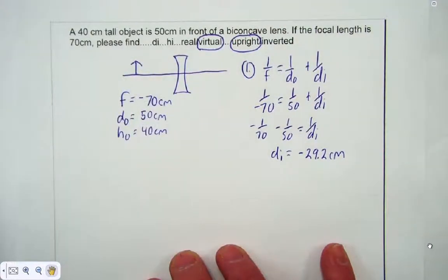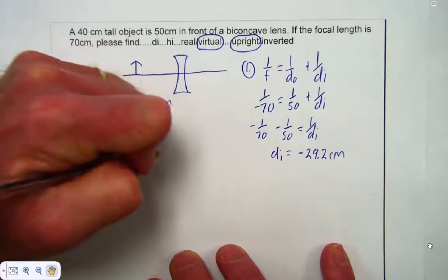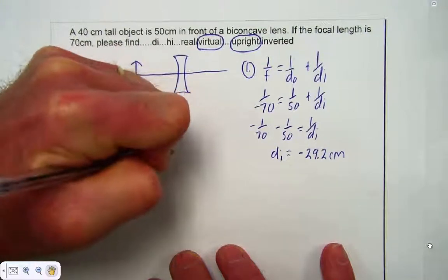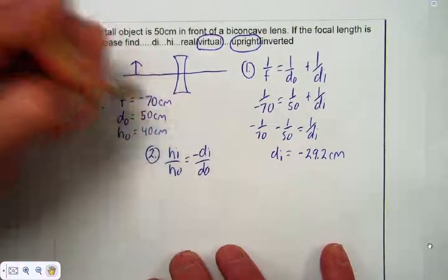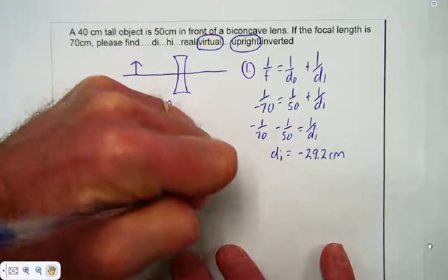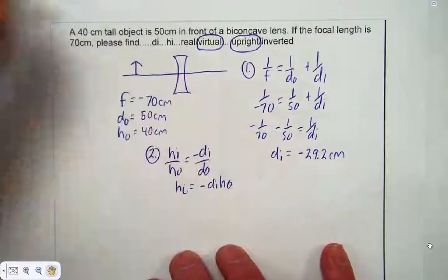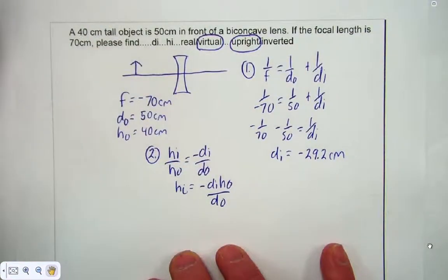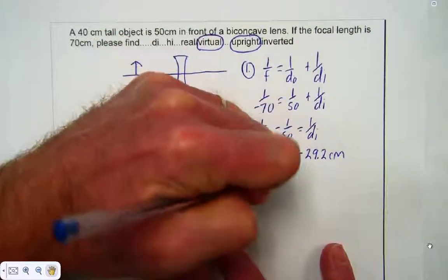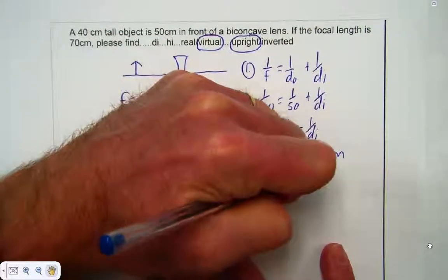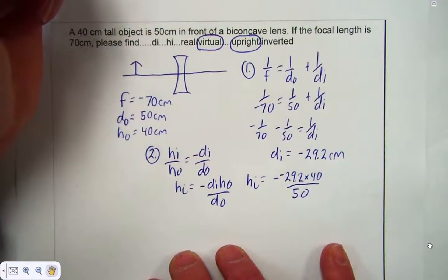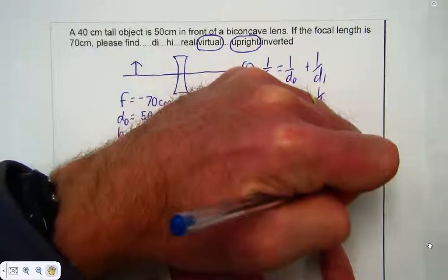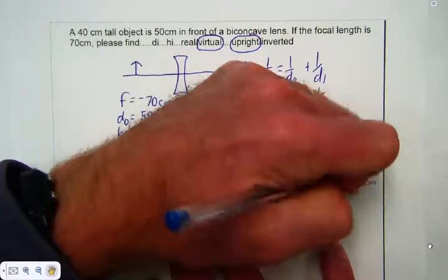So that one response tells us a few different things. The next thing I want to do is find out what h_i is. To do that, I'm going to use h_i over h_o equals negative d_i over d_o. h_i equals negative d_i times h_o over d_o. Now we'll put in the variables: negative negative 29.2 times 40 over 50. This will work out to be 23.3 centimeters positive for h_i.